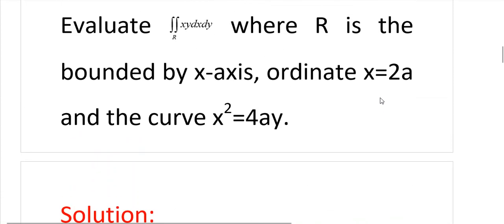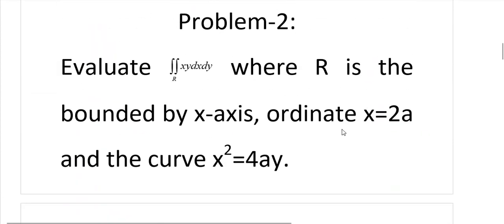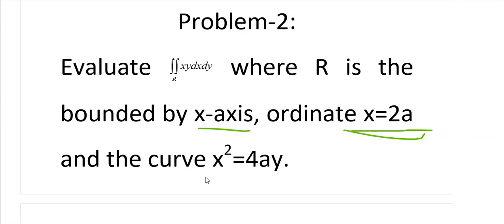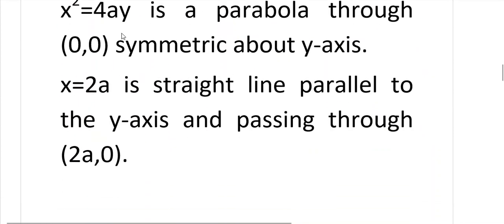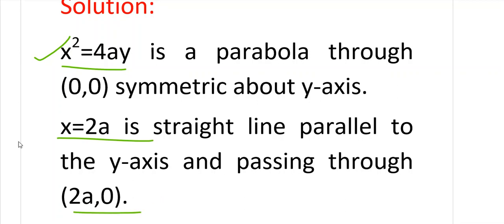First we will discuss about the region. Our region is bounded by three curves: one is the x-axis, another is x equals 2a, and the third is the parabola x squared equals 4ay, which is symmetric about the axis. The line x equals 2a is a straight line parallel to the y-axis passing through the point (2a, 0).